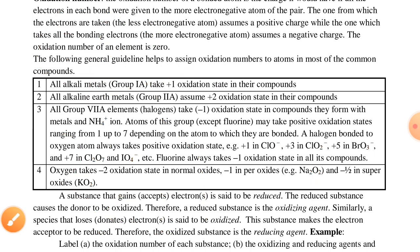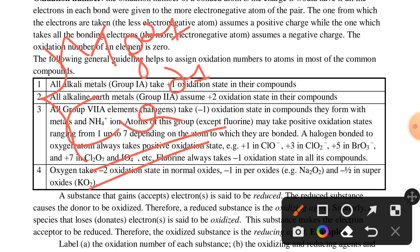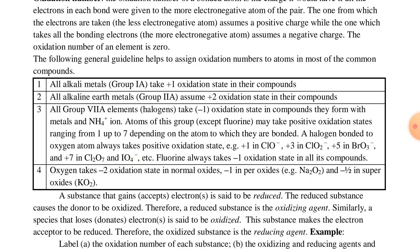All alkaline earth metals or Group 2 elements — such as magnesium and calcium — assume a plus 2 oxidation state in compounds.